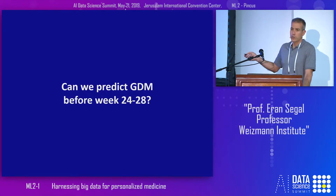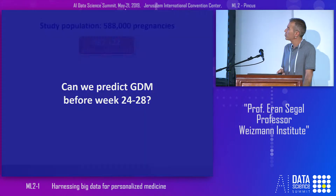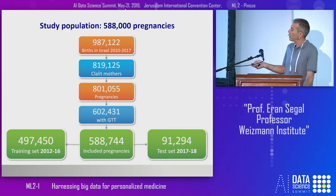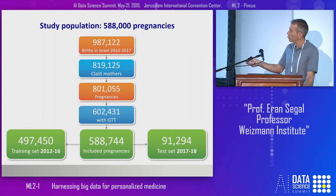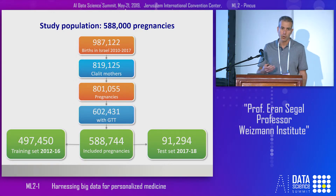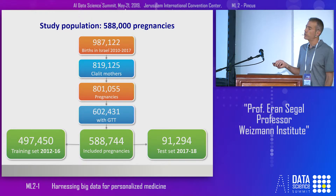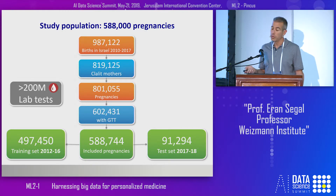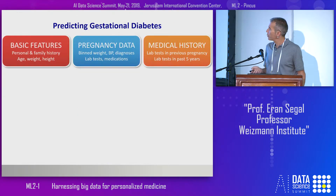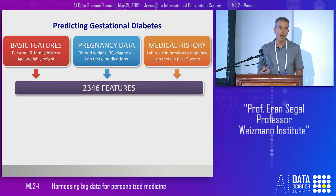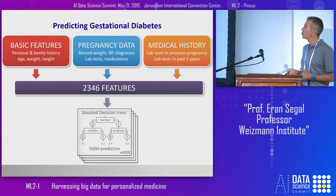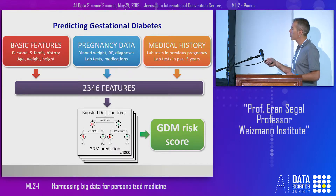Because GDM is diagnosed between weeks 24 and 28, we asked whether we can predict it earlier. We started with close to 1 million births in the data; after filtering we ended up with close to 600,000 pregnancies, which we divided into a historic training set and a future test set to mimic real-life deployment. This is by far the largest dataset ever analyzed for this problem — over 200 million blood tests in total. From this data, we extracted over 2,000 features for every patient from her medical history and current pregnancy data, then used gradient boosting decision trees to predict GDM and derive a GDM risk score.